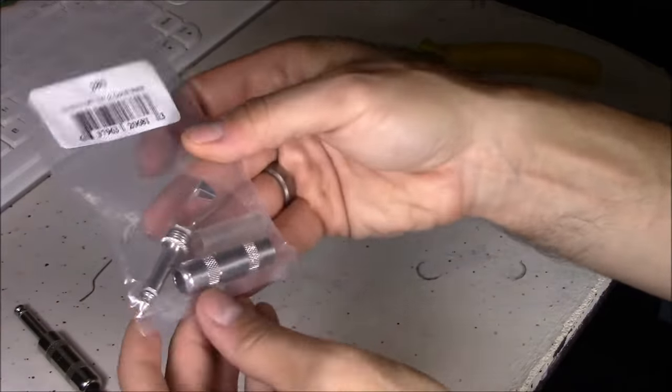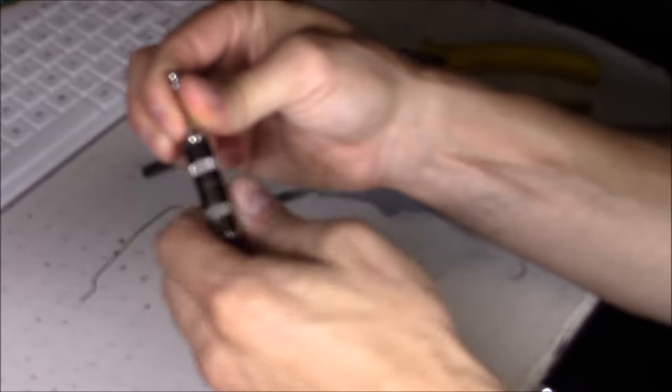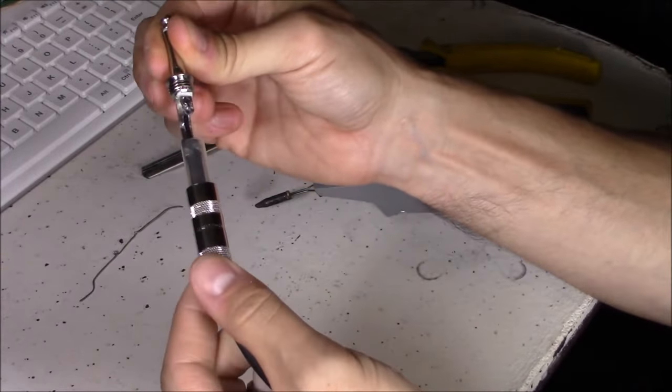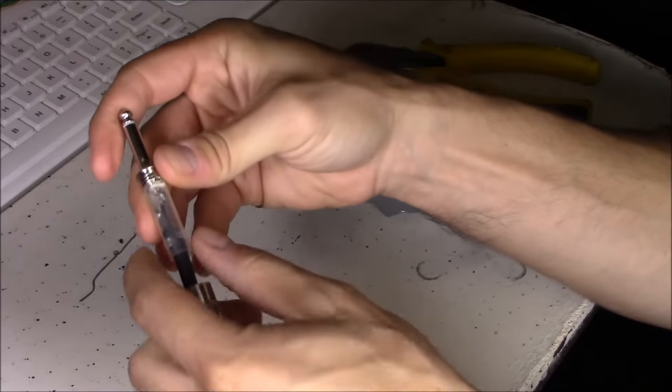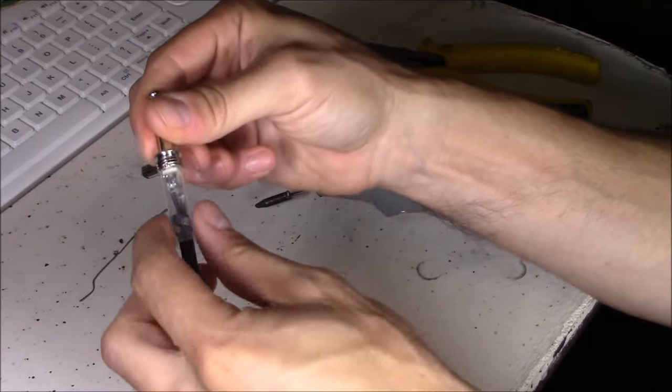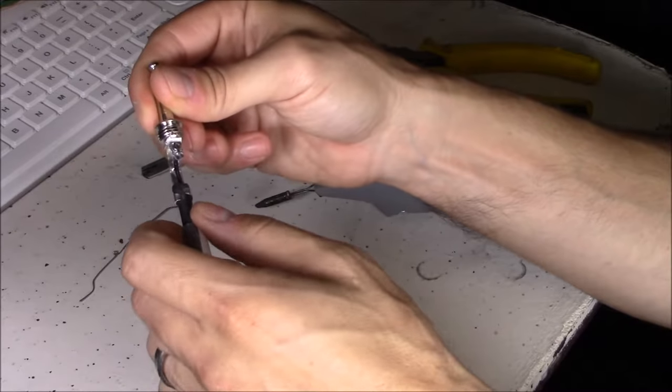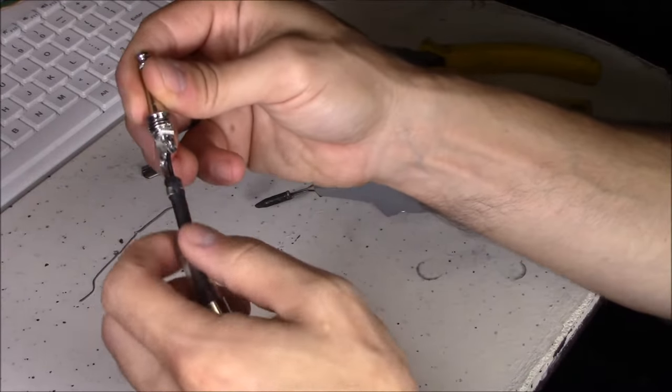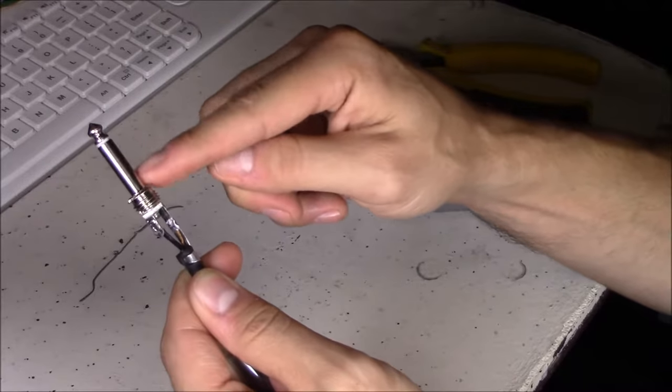So when you open it up it's going to come in three pieces. It comes with the casing to protect the solder connections, the clear tube right here that goes inside the metal casing, and obviously the male connector right here.